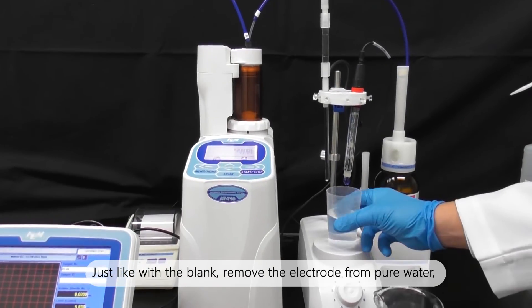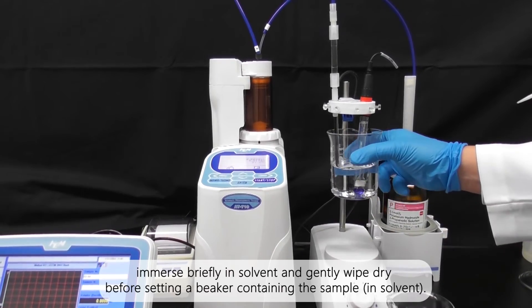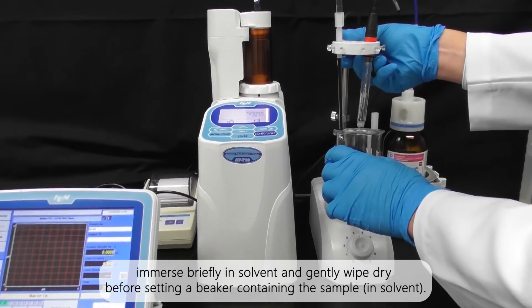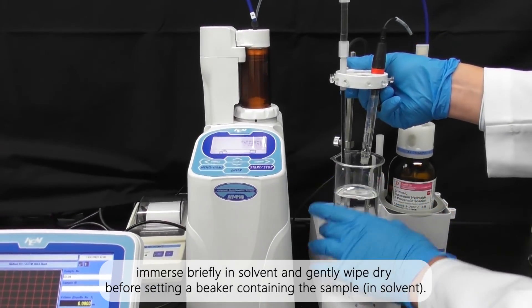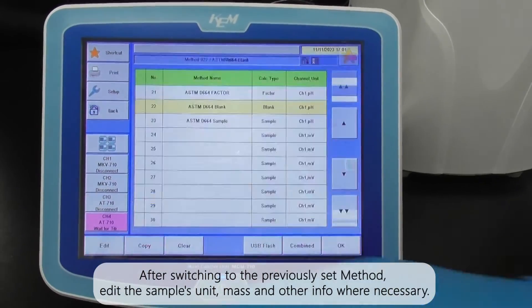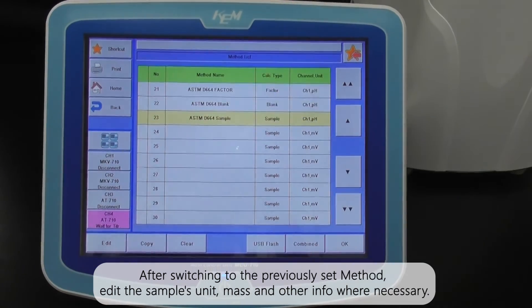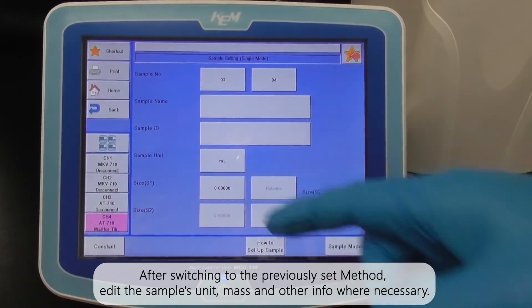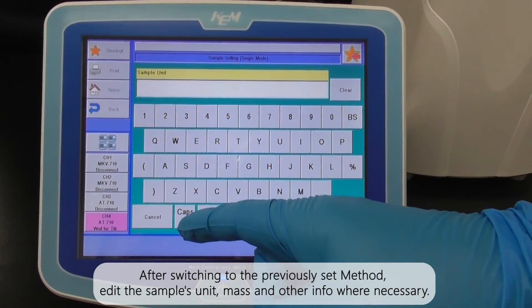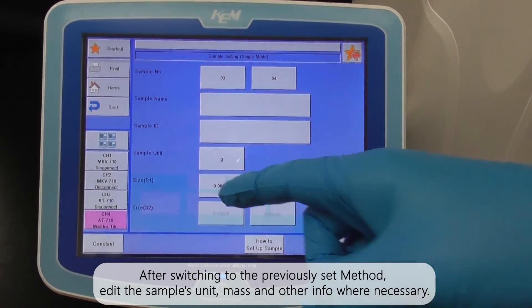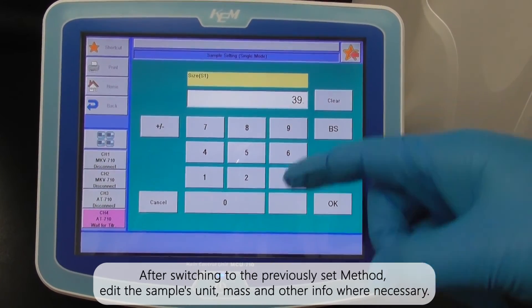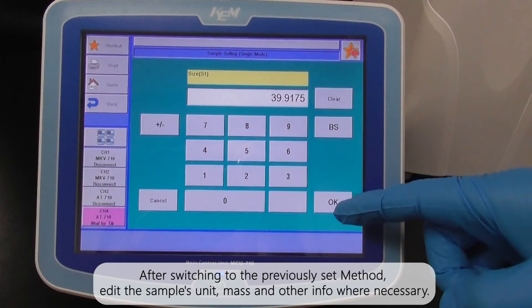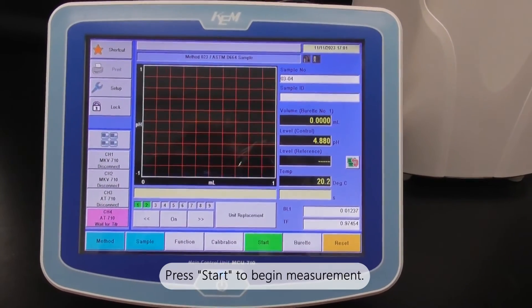Just like with the blank, remove the electrode from pure water, immerse briefly in solvent and gently wipe dry before setting a beaker containing the sample. After switching to the previously set method, edit the sample's unit, mass and other info when necessary. Press start to begin measurement.